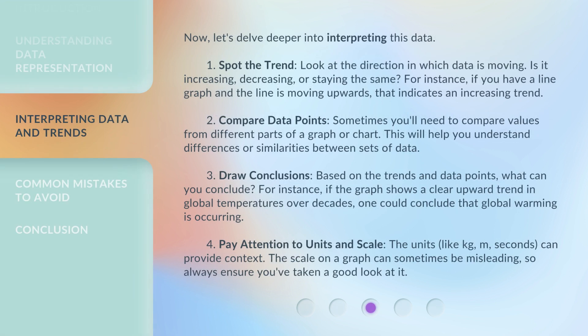Now let's delve deeper into interpreting this data. Step 1: Spot the trend. Look at the direction in which data is moving — is it increasing, decreasing, or staying the same? For instance, if you have a line graph and the line is moving upwards, that indicates an increasing trend.